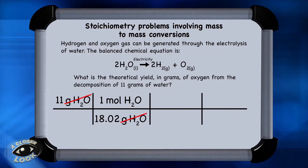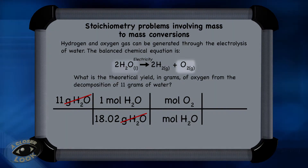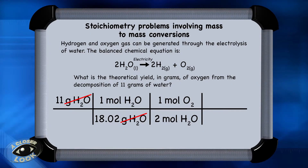At this point, you've effectively converted to moles of water. But the question is to determine grams of oxygen, so you need to keep going with the conversion. Bring down the units — moles of water — and convert from moles of water to moles of oxygen. Notice from the balanced equation that there are 2 moles of water decomposing for every 1 mole of oxygen forming. Put a 2 in front of water and a 1 in front of oxygen, then cancel the units of moles of water. But you still need grams of oxygen, not moles of oxygen.